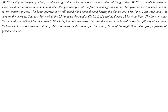The gasoline used by the boats has an MTBE content of 10%, and the boats operate in a well-mixed flood control pond having dimensions of 3 km long, 1 km wide, and 3 m deep on average. Each of the 25 boats on the pond spills 0.5 liters of gasoline during 12 hours of daylight. The flow of water containing no MTBE into the pond is 10 m³/hour, but no water leaves because the water level is well below the spillway. By how much will the concentration of MTBE increase in the pond after the end of the 12-hour boating period?